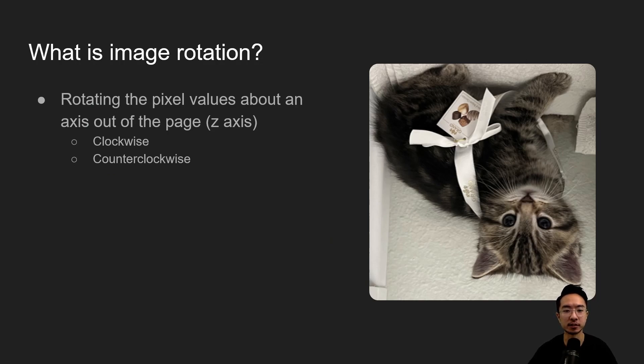So what is image rotation? Image rotation is pretty much rotating all the pixels about some axis. Here we have an axis coming out of the page and we define clockwise as this way and then counterclockwise would be the other way. If you use a right-hand rule you have like into or out of the page so you can use that as reference.